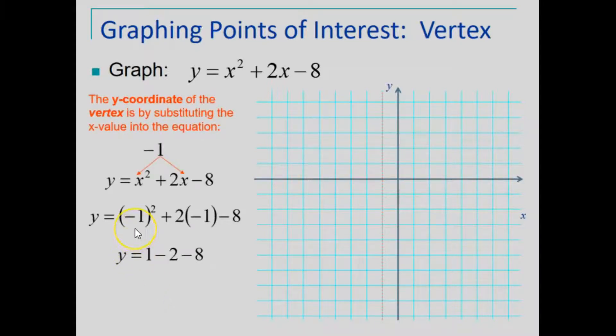Simplifying by following the order of operations, we find a corresponding y value of negative 9 when x is equal to negative 1. We now have our vertex.